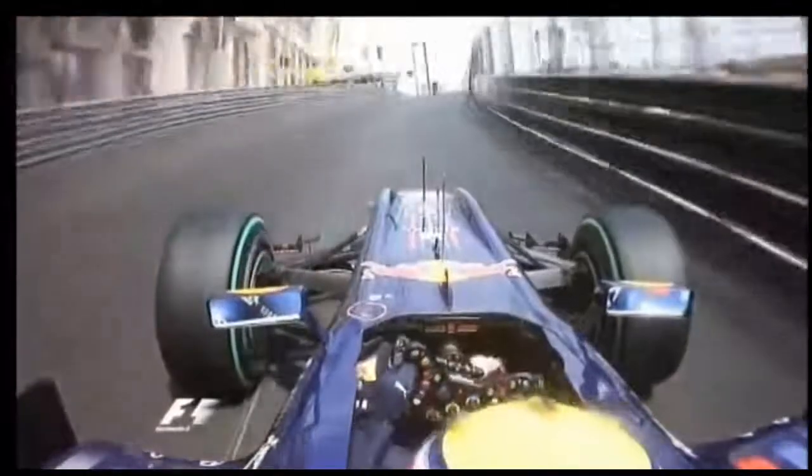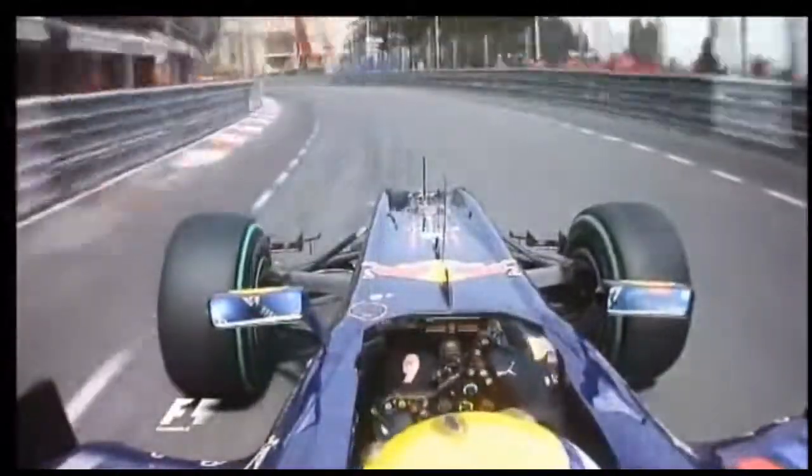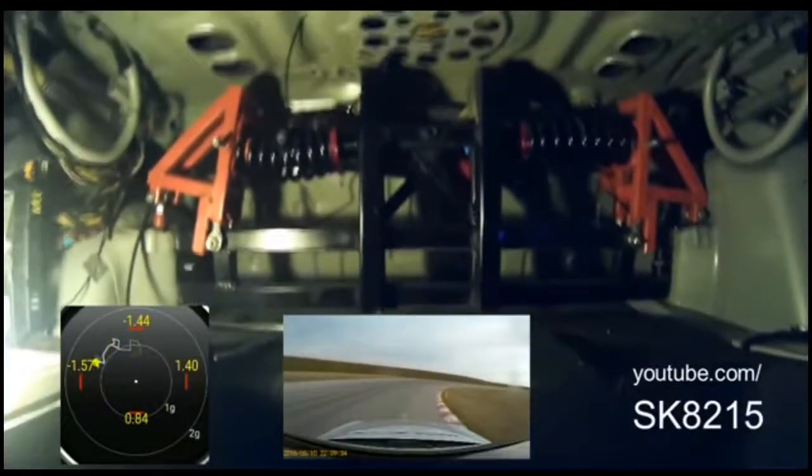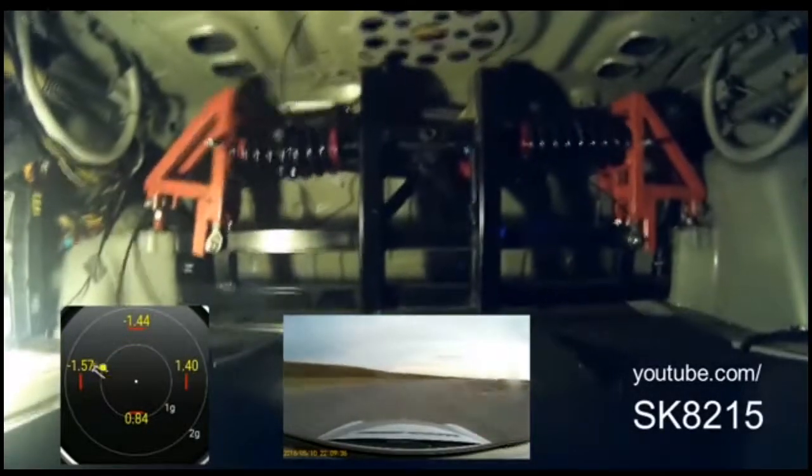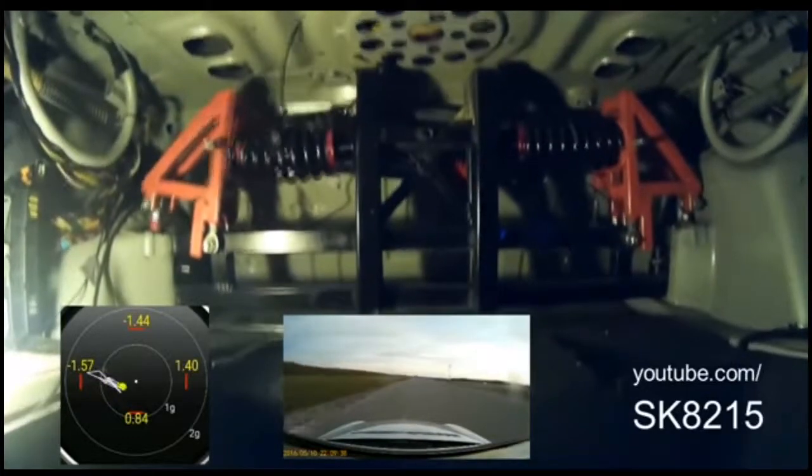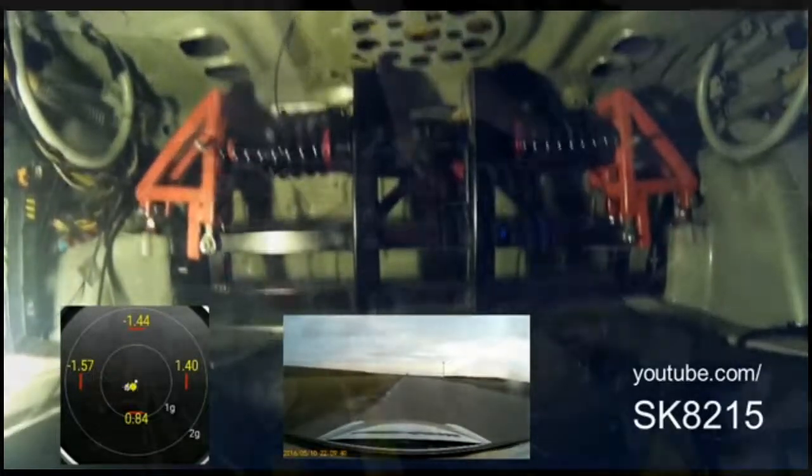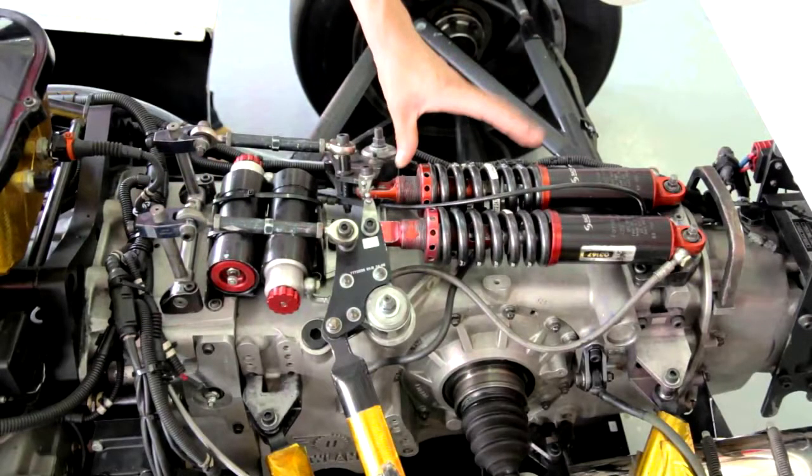Formula 1 cars have double wishbones also called double A arms because the suspension arms look like a capital A. You cannot see the strut however on a Formula 1 car as they are hidden on board. This pushrod system keeps the struts out of view and uses an arm attached to the control arms to articulate the springs. This allows for a very compact and aerodynamic design.